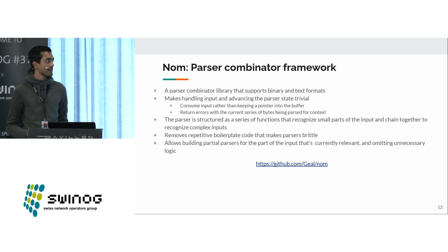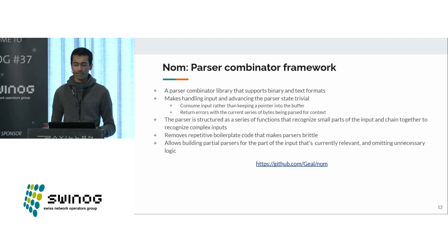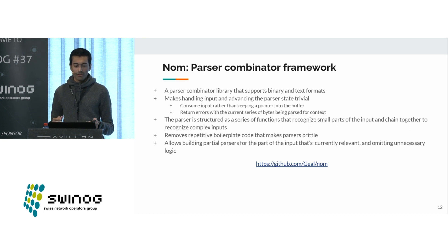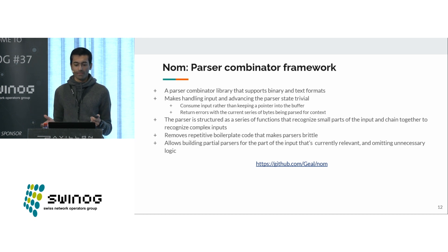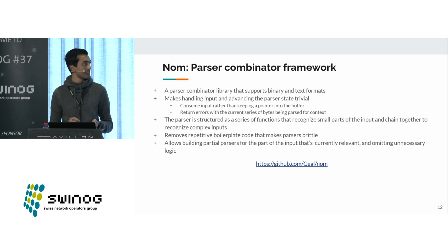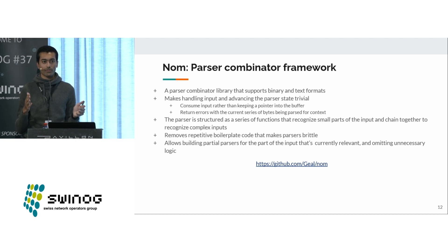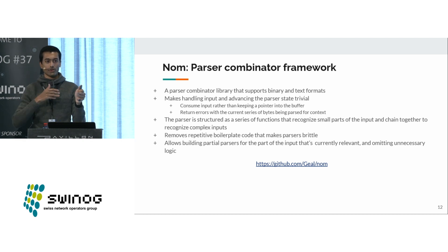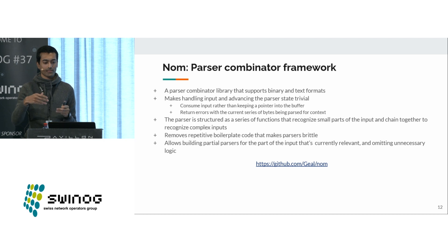For actually parsing the messages, I found a library called nom, which implements a parser combinator framework. What that really means is that you define what format you want to parse in terms of small functions — for example, you can say take this number of bytes out and then combine that by passing these functions around and wrapping them. The benefit is that the library takes care of advancing the pointer in the data you're reading, preventing things like accidentally incrementing too much or other classes of bugs where the parser state isn't correct.